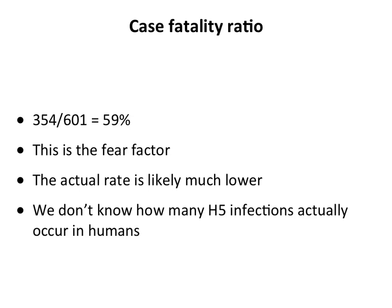If you take the number of deaths over WHO-confirmed cases, you get a case fatality ratio of 59%, which is huge — bigger than any other kind of influenza. The worst flu outbreak was 1918, with a case fatality ratio of about 2%. Seasonal flu is 0.1 to 0.2%. This is the fear factor with H5N1 — why people freak out about this virus. They say if it gets out of birds and spreads among people, it's going to kill half the world.